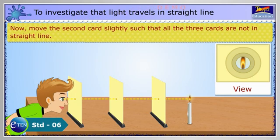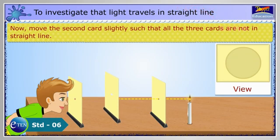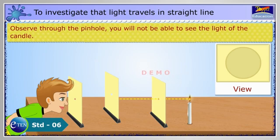You will be able to see the light of the candle passing through all the holes. Now, move the second card slightly such that all the 3 cards are not in a straight line. Observe through the pinhole. You will not be able to see the light of the candle.